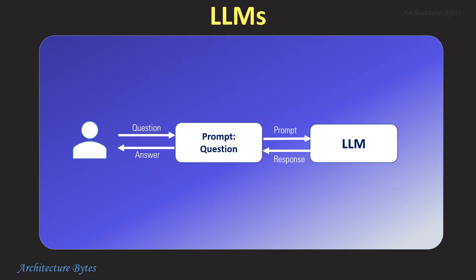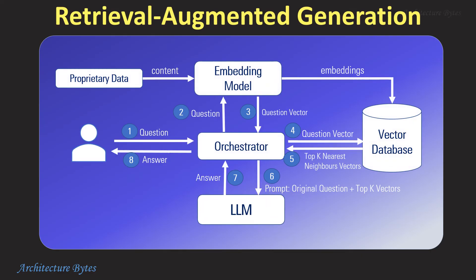So how do we address this? We can use what is known as the Retrieval Augmented Generation technique. Here, proprietary data is converted to vector embeddings by an embedding model and stored in a vector database. Based on the user question, relevant data is first retrieved from the vector database, and then a prompt is created which is made up of the original user question and the retrieved contextual data. This prompt is then sent to the LLM to generate a response. With this technique, the LLM successfully generates a relevant contextual response using proprietary data.